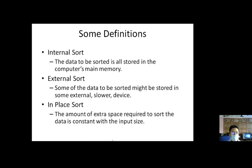The next term is in-place sorting. The amount of extra space required to sort the data is constant with respect to the input size. For sorting, we need to store some extra space for temporary data that is being processed, and this extra space required is constant with the input size. So these are the three key terms: internal sort, external sort, and in-place sorting.